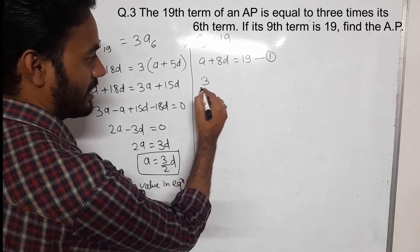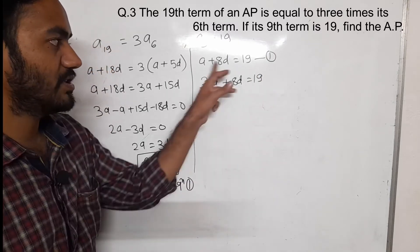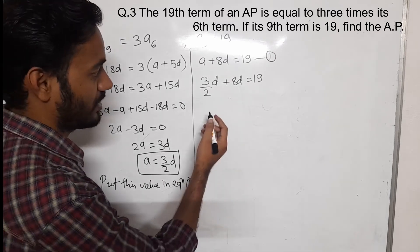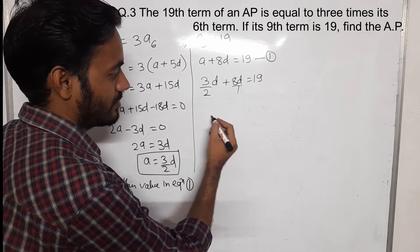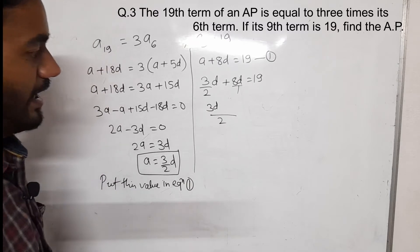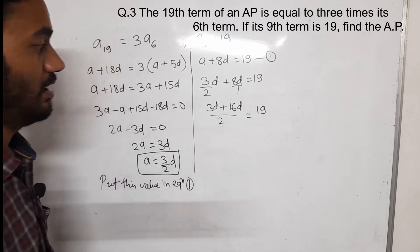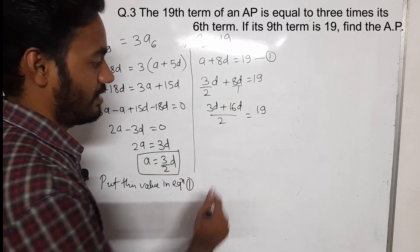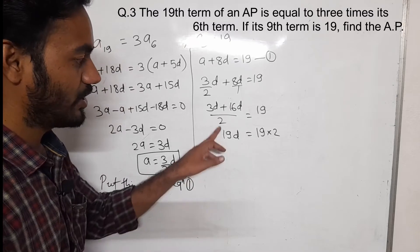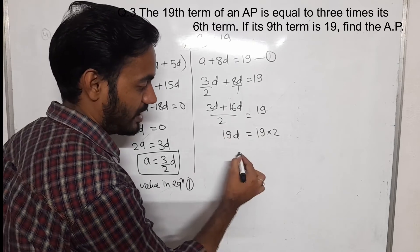Our equation 1 is A plus 8D equals 19. Substituting A equals 3 by 2D: 3 by 2D plus 8D equals 19. Taking LCM of 2: 3D plus 16D equals 19 into 2. So 16 plus 3 gives 19D equals 38. The 2 in the denominator moves to multiply the right side.